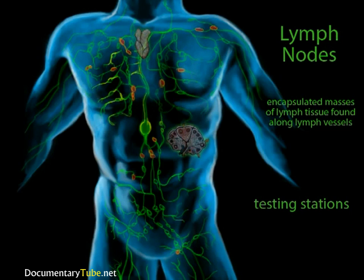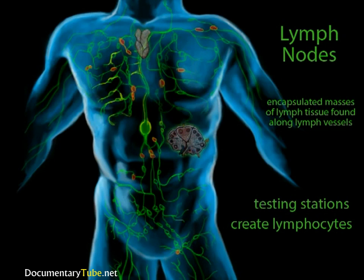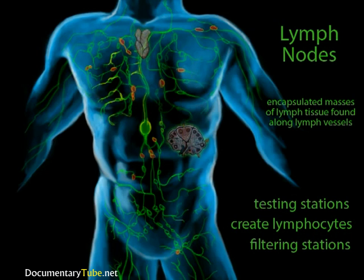They monitor the blood by receiving samples of the blood plasma. Second, if the sample is rife with foreign invaders, they produce lymphocytes and send them into the bloodstream to try to destroy those invaders. In addition, the lymph nodes filter the lymph so they can only return clean fluid back to the blood. Eventually, the lymph is returned to the circulatory system via the right and left subclavian veins in the shoulders, just above the heart level.